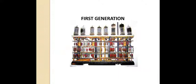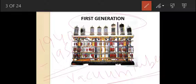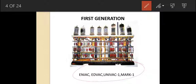The very first generation is the first generation, and its timeline was from 1940 to 1956. In this generation, vacuum tubes were used — that was the technology used. Its features: they occupy a lot of space, they were expensive to operate, they use a lot of electricity and generate a large amount of heat, and the speed of these computers is very slow. Examples are ENIAC, EDVAC, UNIVAC, and Mark One.